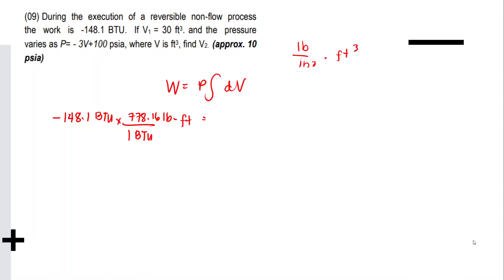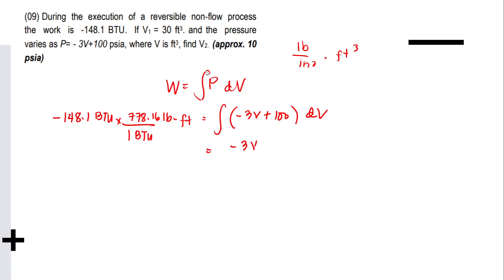P is not constant, so work = ∫(−3V + 100) dV, which integrates to −3V²/2 + 100V, evaluated from 30 ft³ to V2. Also, since units are lb/in² × ft³, we convert by dividing by 144 in²/ft². −148.1 × 778.16 = −115,245.496 ft·lb, divided by 144.